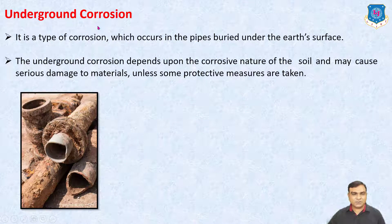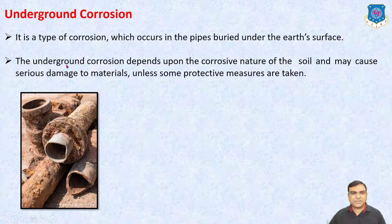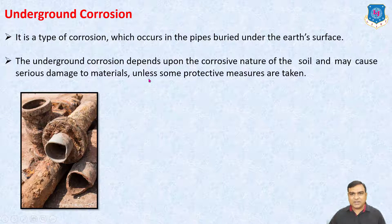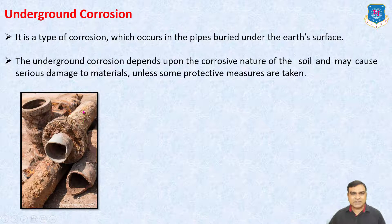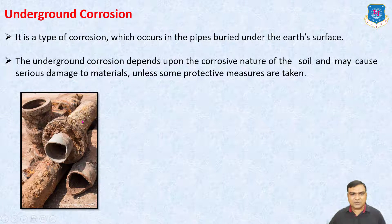Underground Corrosion is a type of corrosion which occurs in pipes buried under the earth's surface. The underground corrosion depends upon the corrosive nature of the soil and may cause serious damage to materials unless protective measures are taken. This type of corrosion is seen in underground pipes where, due to sand and other particles, the surface of the pipe is corroded.